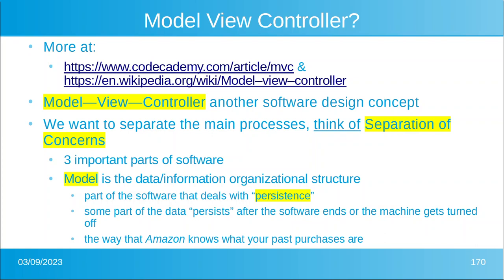There are three important parts of software. The first one we call the model — model is the data or information organizational structure. We haven't really done anything like this yet because we haven't stored a data file, but this is how Amazon, for example, knows your past purchases. Some data that you create needs to persist after the software ends or the machine is turned off, and we call that concept persistence.